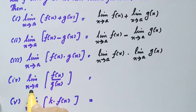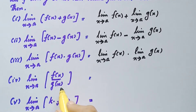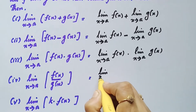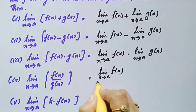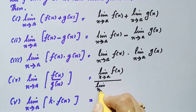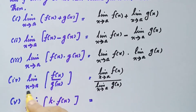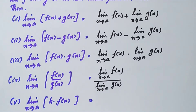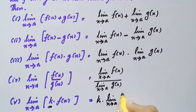For the fourth property: limit x tends to a of f(x) divided by g(x) — a rational function — equals the limit of f(x) divided by the limit of g(x), so the limit of a quotient equals the quotient of the limits. The fifth property: limit x tends to a of k times f(x), where k is a constant — you can take the constant outside and find the limit of f(x) alone.